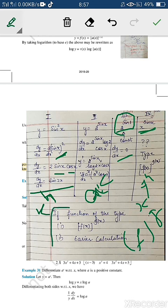There are two cases where we apply logarithmic differentiation: first, when the function is of the form f(x)^g(x) — that is, both base and exponent are functions of x. Second, to make complex calculations easier. So we will solve the fourth example x^(sin x) using logarithmic differentiation.